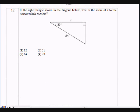Okay, let's move on. Question number 12. We have a triangle. It's a right triangle. How do I know? There's a right angle over here.